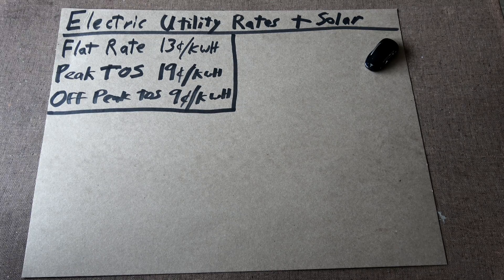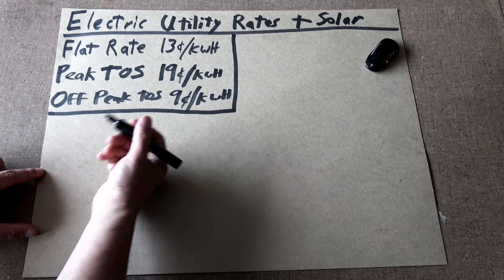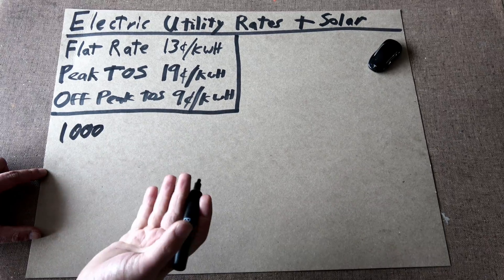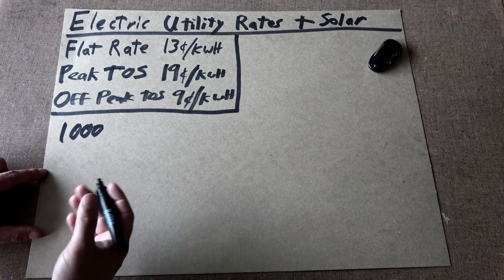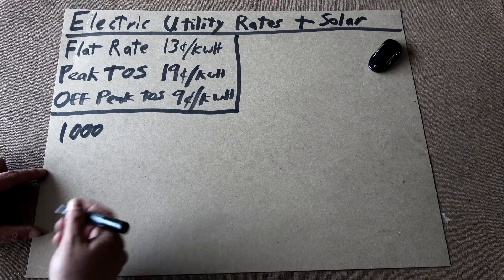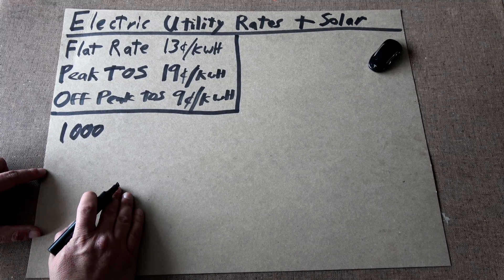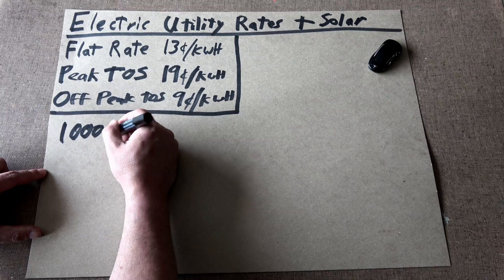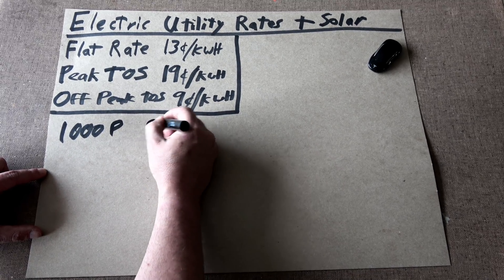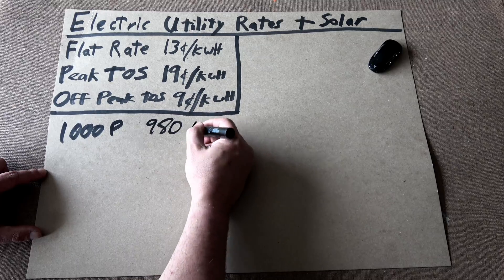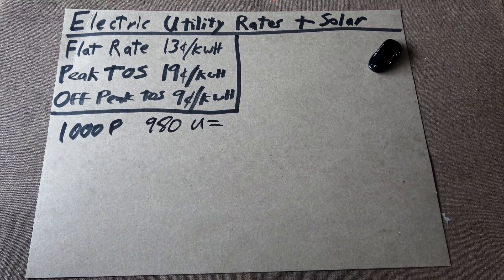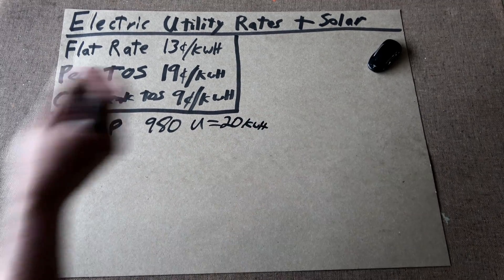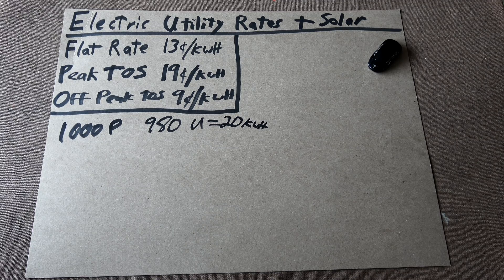Say you produce 1,000 kilowatt hours, and it's actually 1 megawatt, but it's easier to say kilowatt hours because that is what you're generally billed at. If you produce 1,000 kilowatt hours and you only use, say, 980 kilowatt hours, that means you have a difference of 20 kilowatt hours that the utility would then have to pay you for.